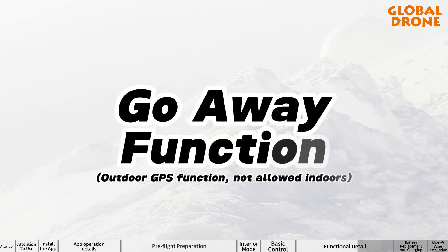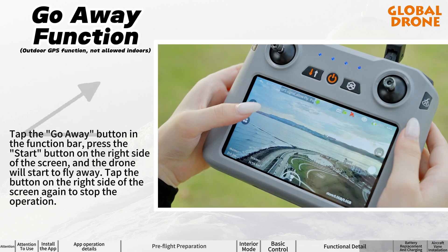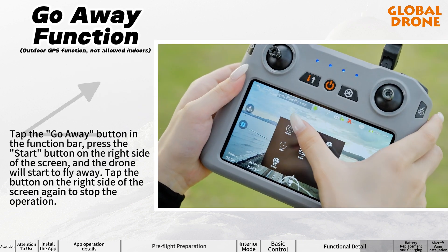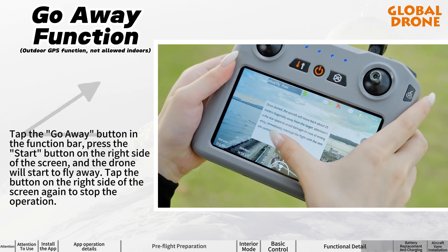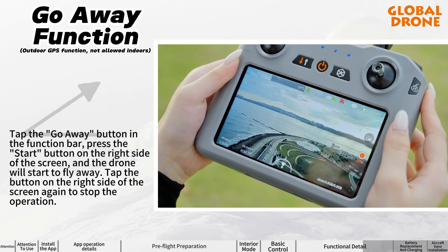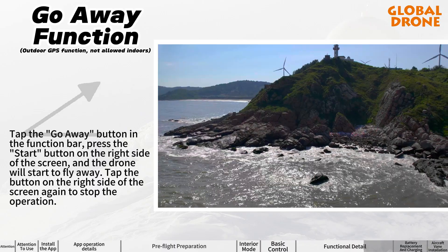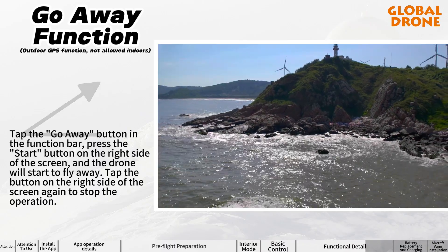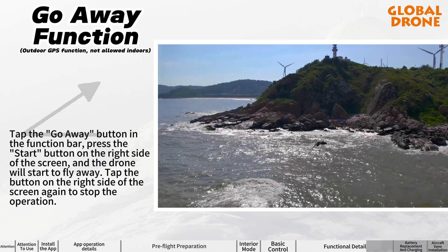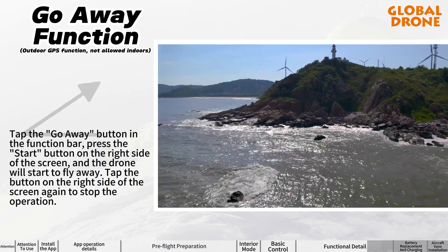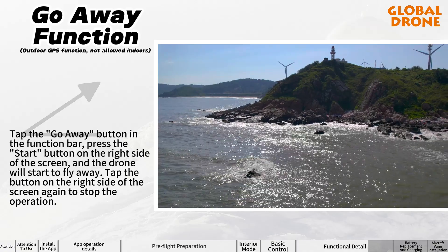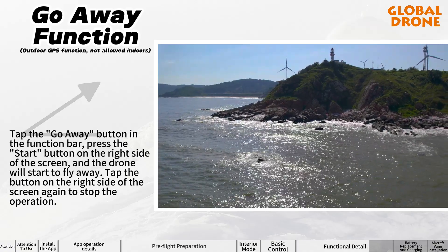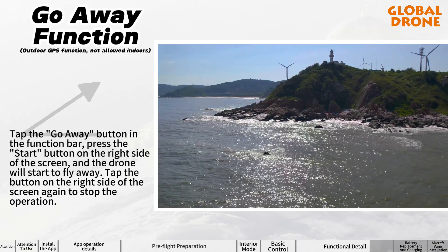Go away function: tap the go away button in the function bar and press the start button on the right side of the screen. The drone will start to fly away. Tap the button on the right side of the screen again to stop the operation.